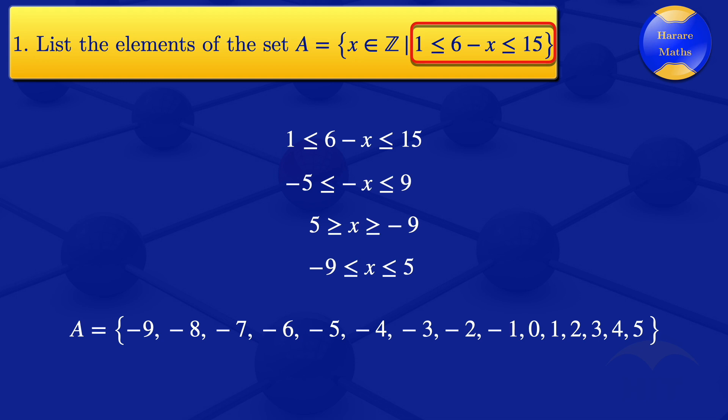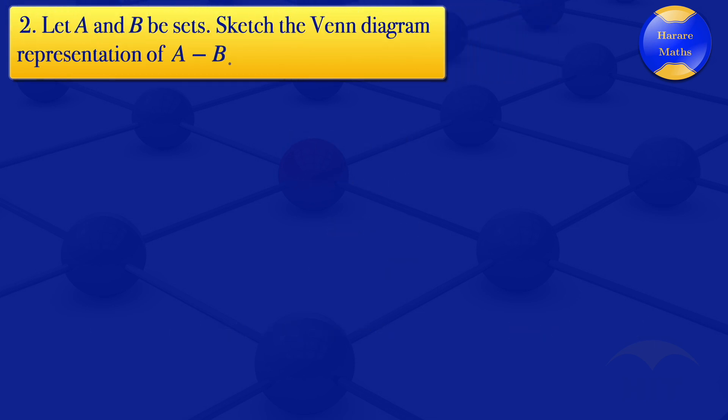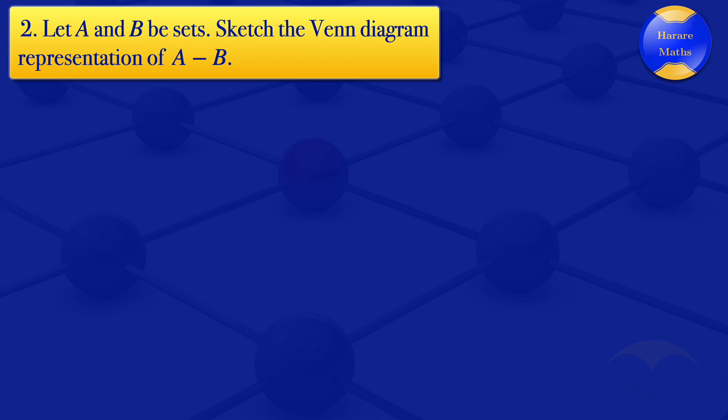I'll now move on to question number 2. And for question number 2, we are looking at the sets A and B and want to sketch the Venn diagram representation of A minus B.